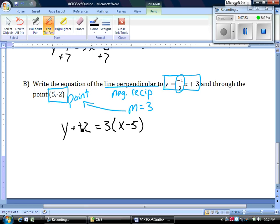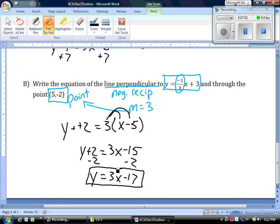Minus negative becomes plus. So y plus two. Distribute my three to get three x minus fifteen. Minus two from both sides to get y equals three x minus seventeen.